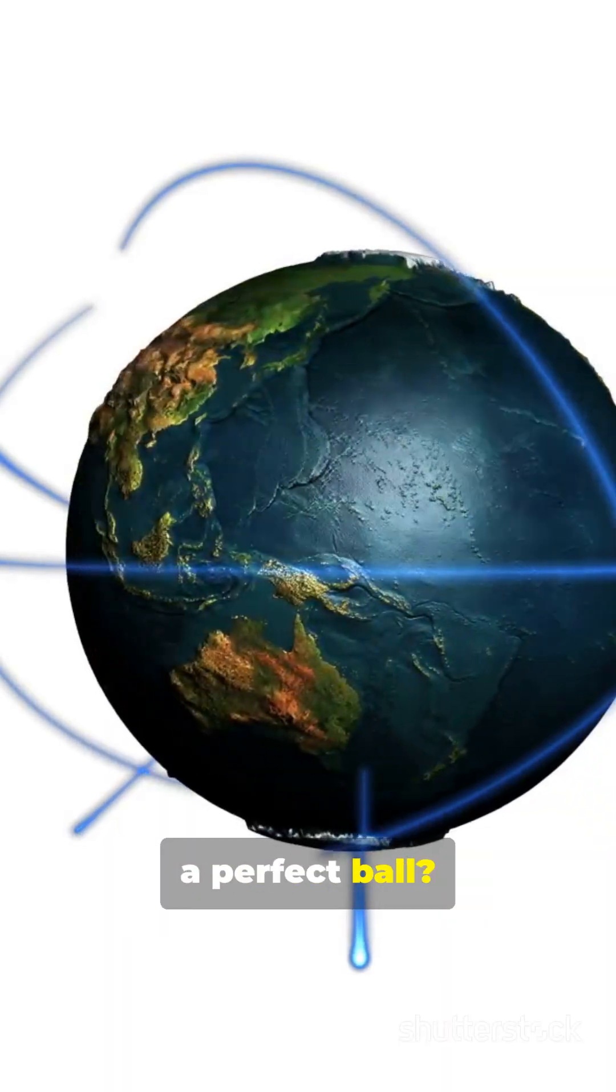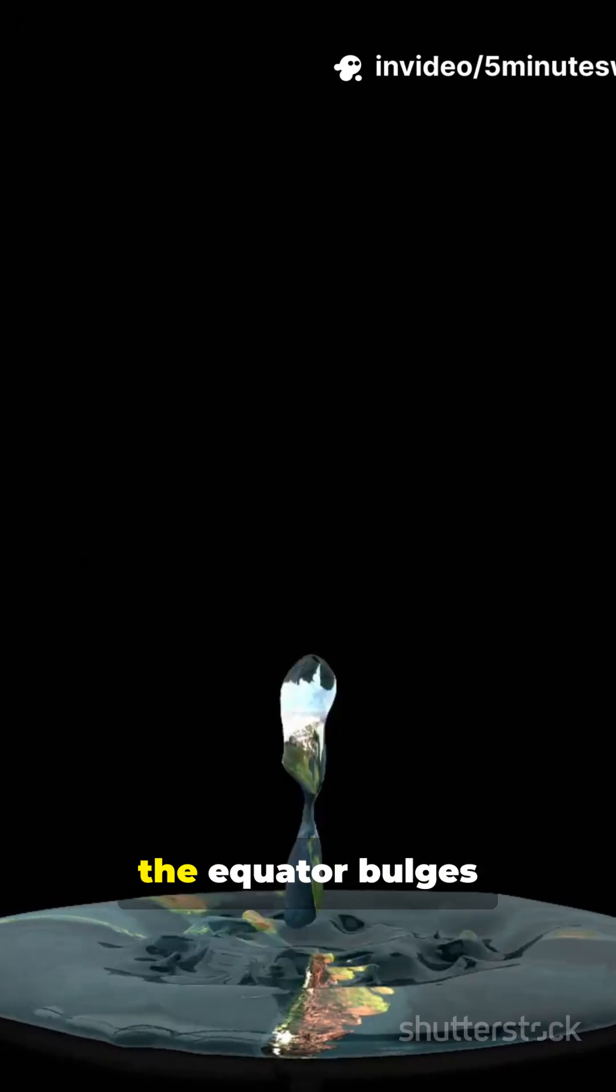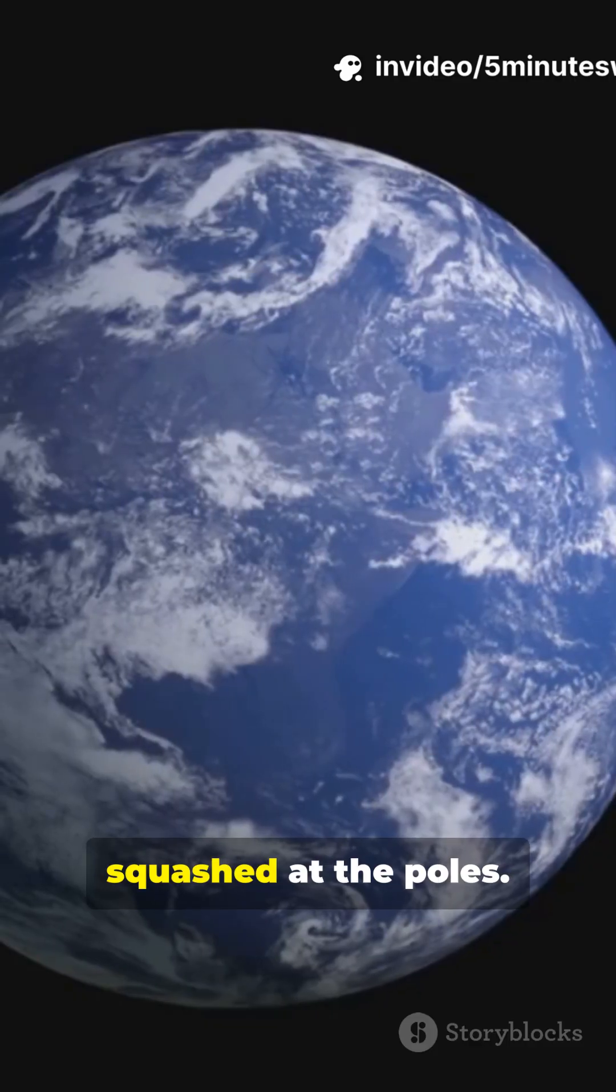So why isn't Earth a perfect ball? Because Earth spins, the equator bulges outward a little, making it slightly squashed at the poles.